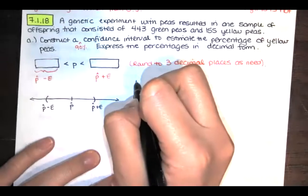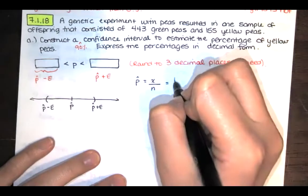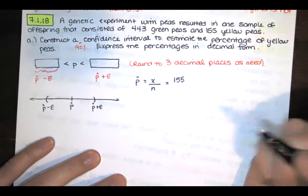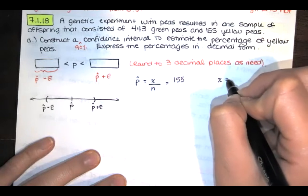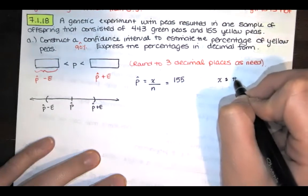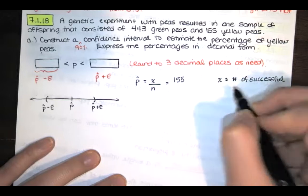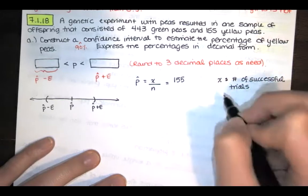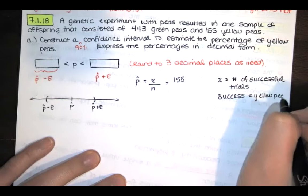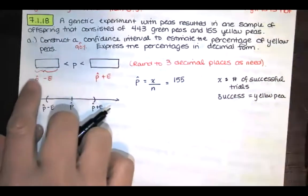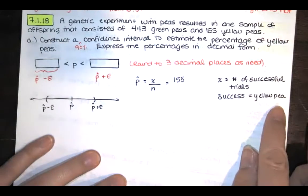P-hat is the number of successes out of the total number of trials that we have. We had 155 yellow peas, and we're going to consider that a success. I'm just writing this down for myself. X is the number of successful trials, and we're calling success getting a yellow pea. We want success to be a yellow pea because we're asked to construct a confidence interval to estimate the percentage of yellow peas. That's why we're using that for success.